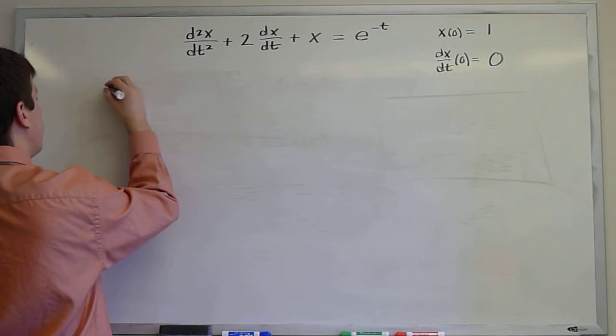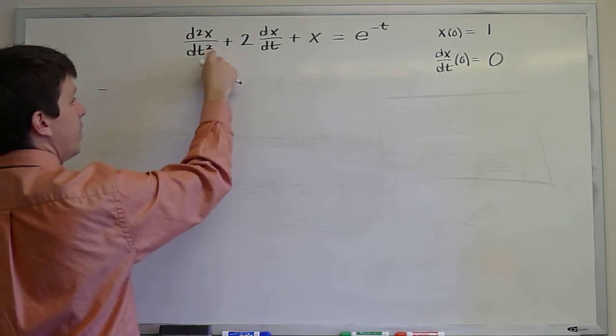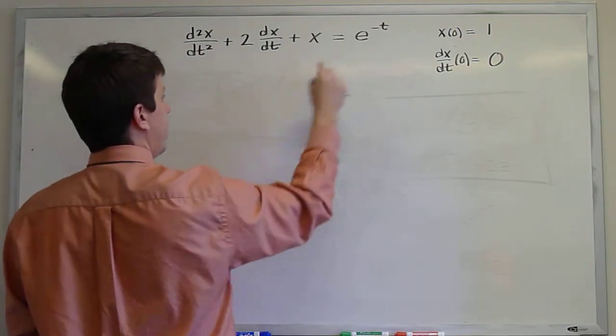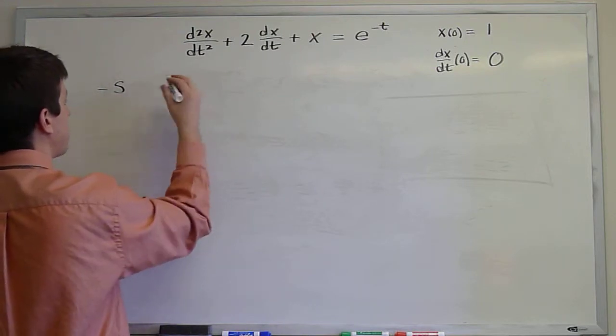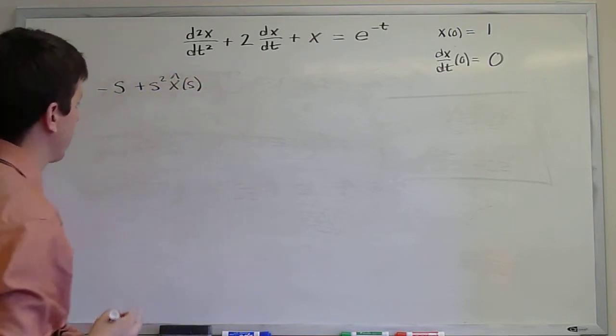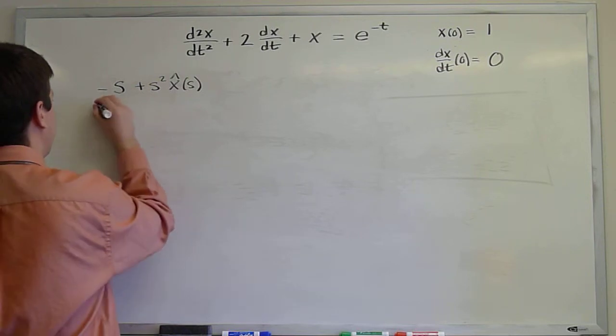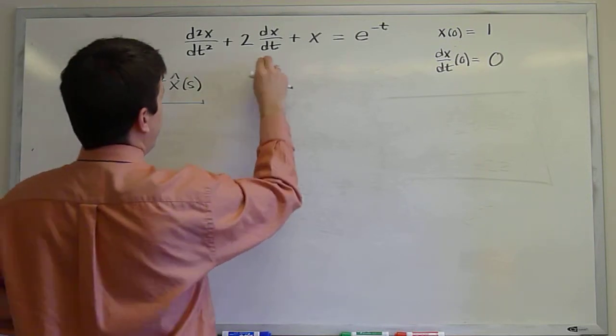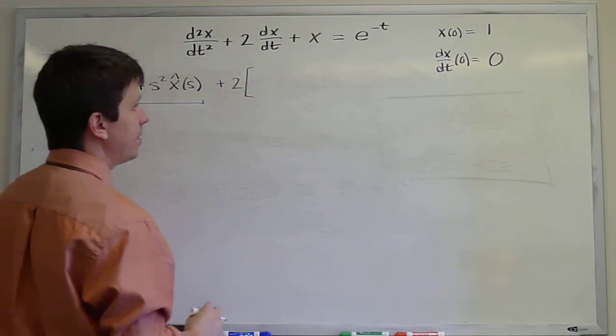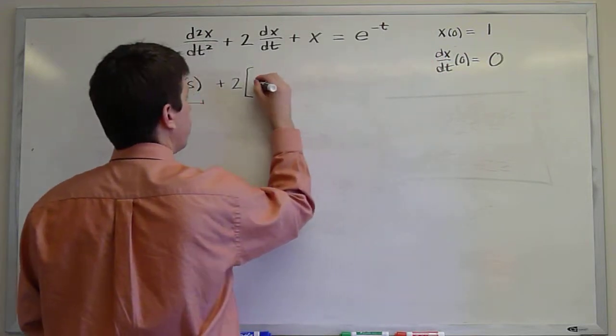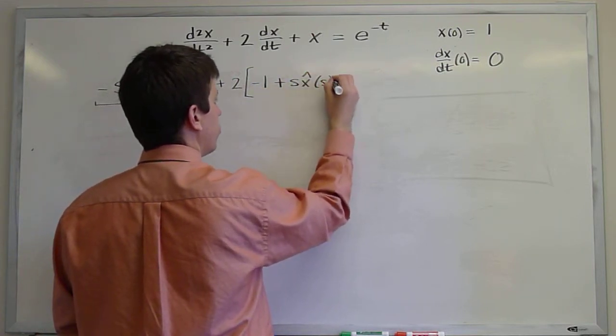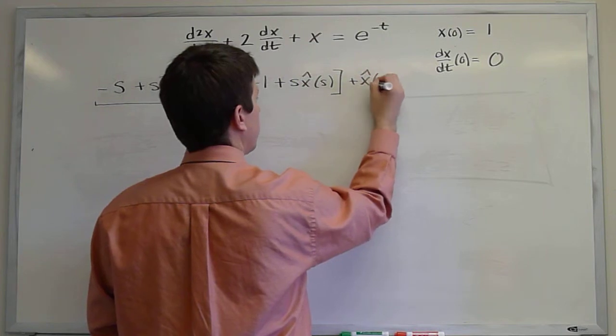We'll get negative dx/dt evaluated at 0, that's 0, so we don't get that term. Then we get a minus s times x evaluated at 0, and that's 1, so we get a minus s. Finally, we get a plus s squared x hat of s. This is all the second derivative term. Then we turn to the first derivative term. We'll get 2 times, what's the Laplace transform of dx/dt? It's negative x of 0, which will be negative 1 in this case, plus s times the Laplace transform of x, plus x hat of s.